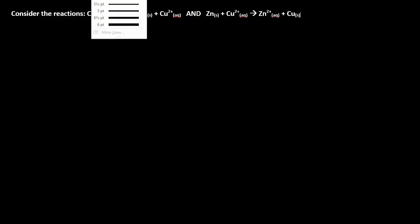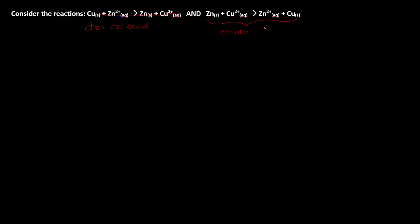Have a look at these reactions. We know that only one of them occurs spontaneously - we looked at this in the lesson three video. The reaction that actually occurs spontaneously is the second one. The zinc, when added to a solution of copper two ions, will occur spontaneously and will yield solid copper and a solution of zinc.